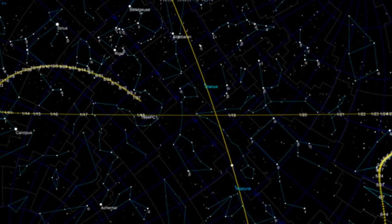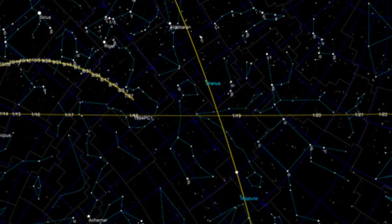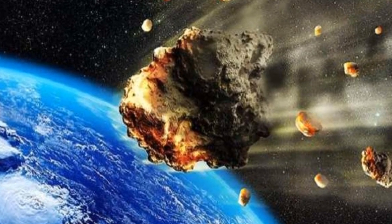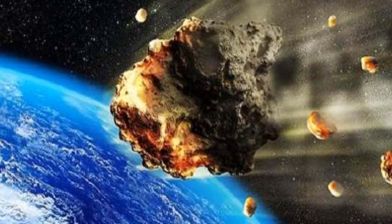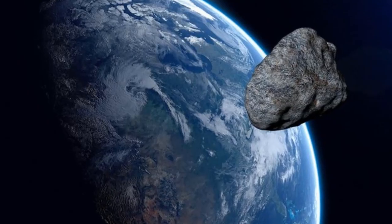The closest approach of the potentially dangerous asteroid to Earth will occur at 4:51 p.m. Eastern Standard Time on January 18, or 3:21 a.m. IST on January 19.